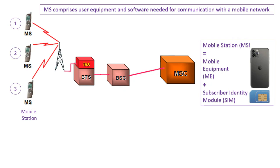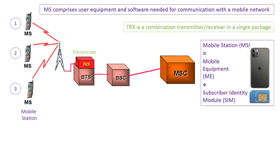Multiple mobile stations are connected to a single tower. This tower is connected to the BTS via TRX. TRX is the transceiver — a combination of transmitter and receiver in a single package. TRX can perform two operations: sending and receiving.